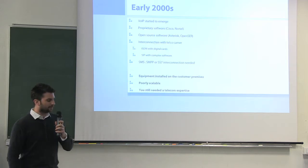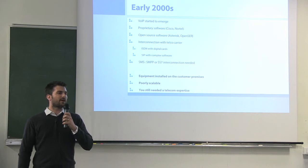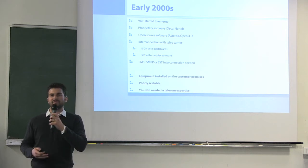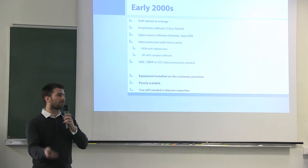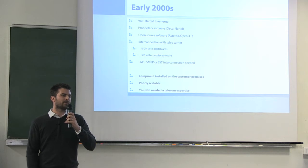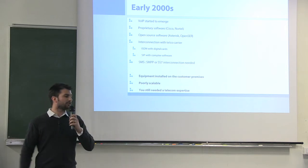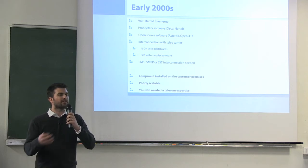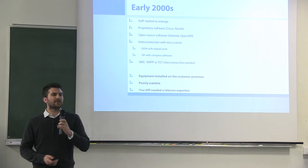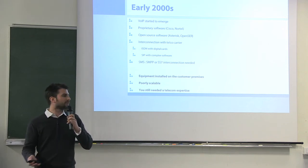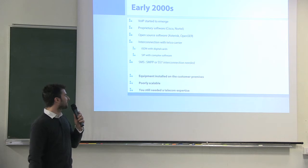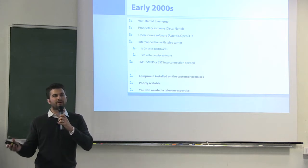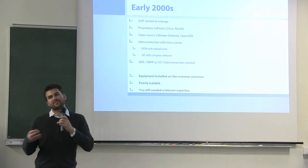A few years later, in the early 2000s, VoIP started to emerge and companies started to replace telephone lines with voice over IP. But they would still need expensive hardware. Some of them started to use open source software like Asterisk or Camayo or OpenSER, but in the early 2000s it was not stable enough for production or large environments. And even though you used voice over IP and no longer used telephone lines, you still had to interconnect with a carrier using SIP, which could still be very expensive. Integration was probably easier, but it was still expensive and complex, and you still needed telecom expertise in your company.